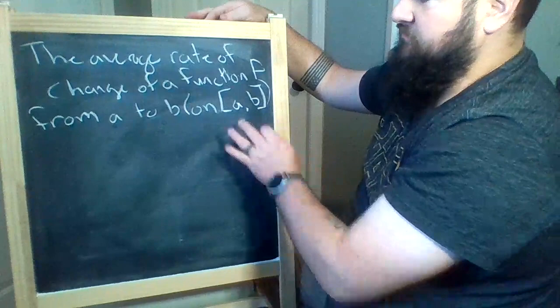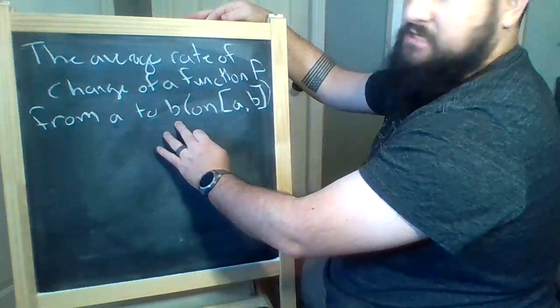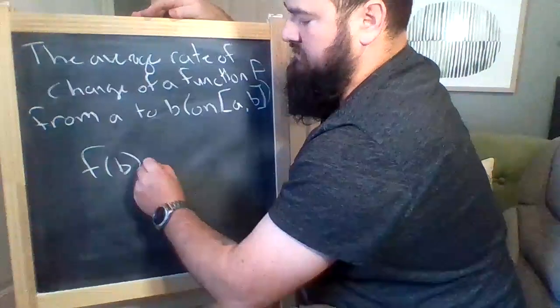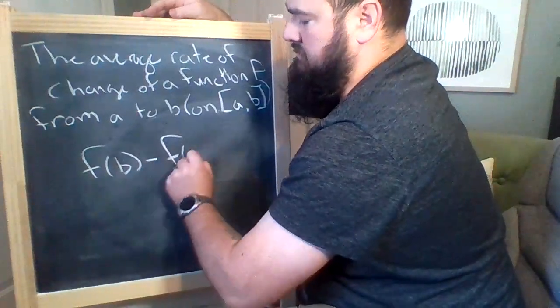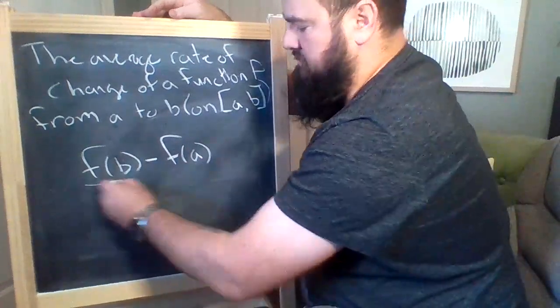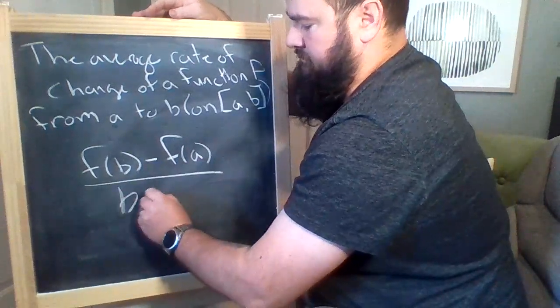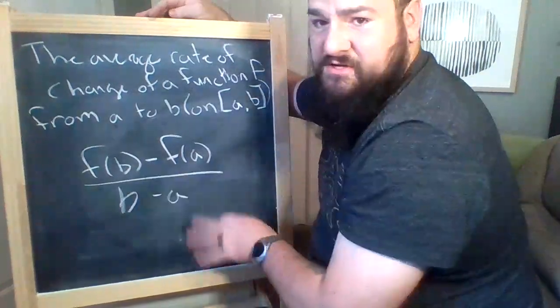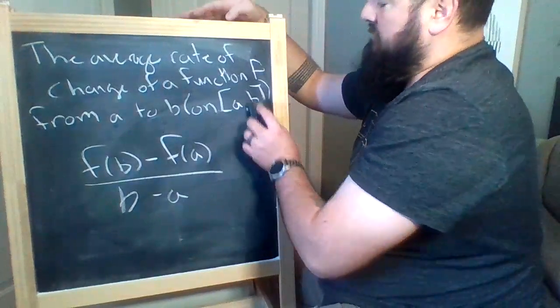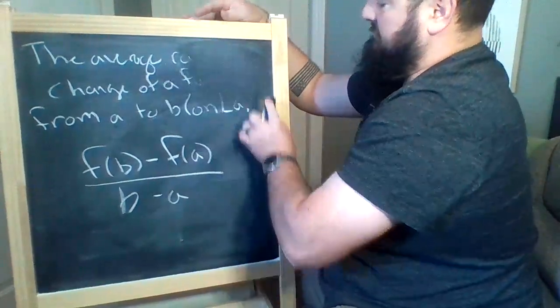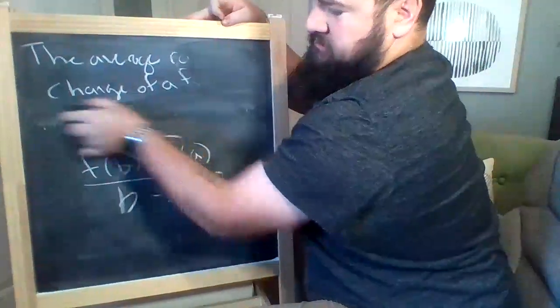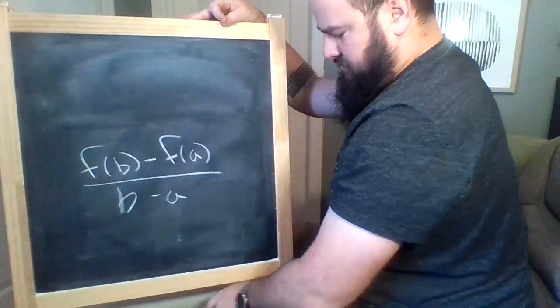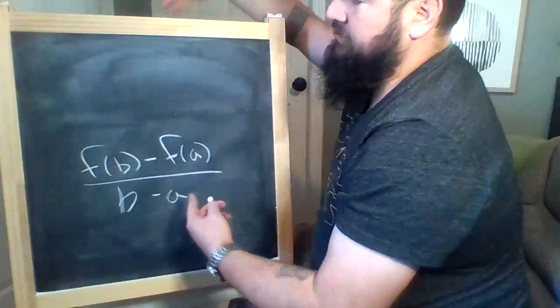So the average rate of change of a function f from a to b is found using this formula: f(b) minus f(a) all over b minus a. That's it, that's our average rate of change formula, really simple. Now I'm going to erase this, so I need more room, and this is a tiny chalkboard.